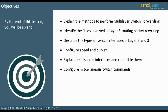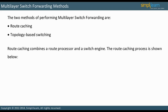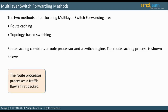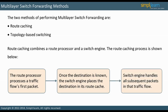Let us begin the discussion with multi-layer switch forwarding methods. There are two options: route caching and topology-based switching. Route caching combines a route processor and a switch engine. The route processor processes a traffic flow's first packet. Once the destination is known, the switch engine takes over. It places the destination in its route cache and handles all subsequent packets in that traffic flow.